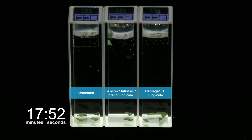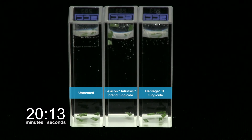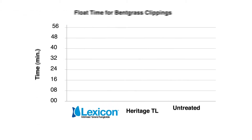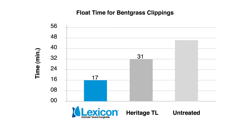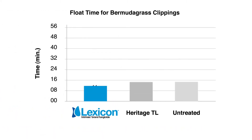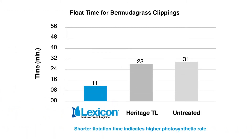The time it takes for 50% of the turf segments to float is referenced as the float time 50, and can be used as a measure of photosynthesis. Eventually, the untreated will also undergo photosynthesis, and those segments will also begin to float. The significance of what you just saw is that turf segments obtained from Lexicon Intrinsic Brand Fungicide treated turf are more effective at photosynthesis, and turf that is more effective at photosynthesis tends to be healthier.